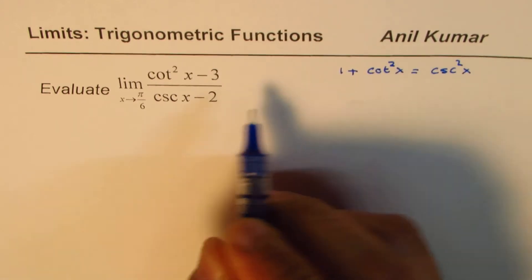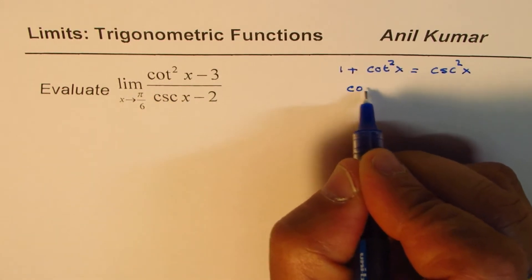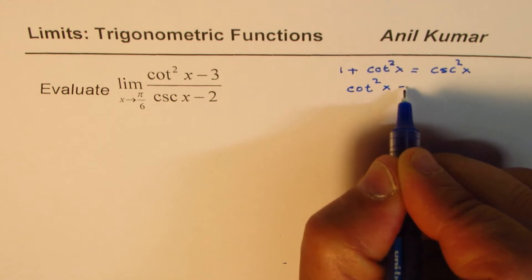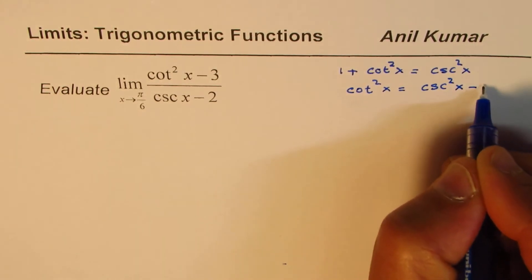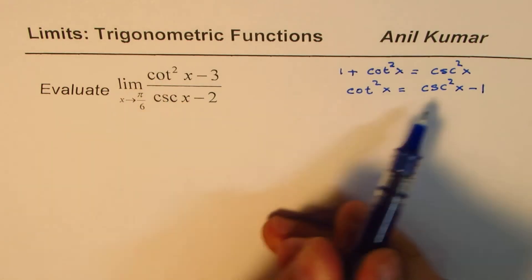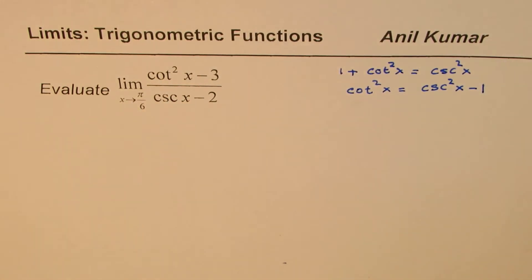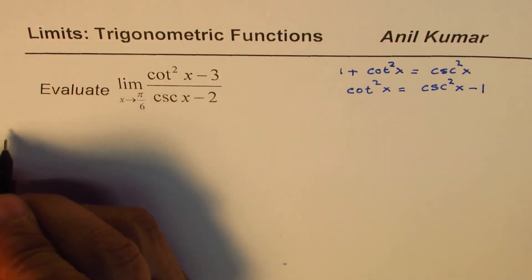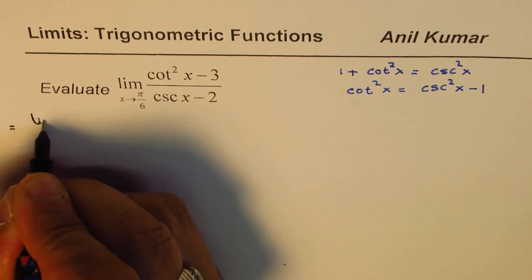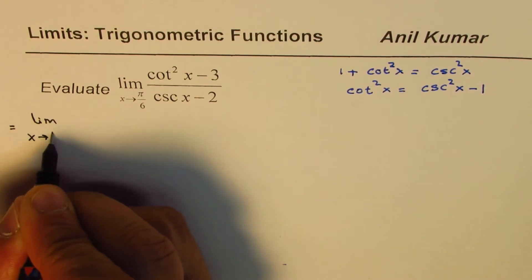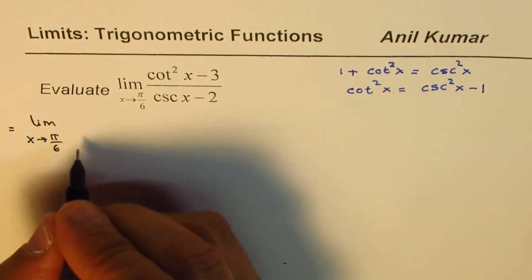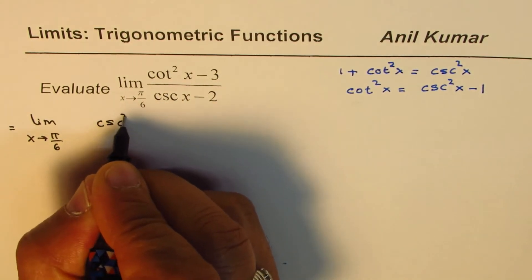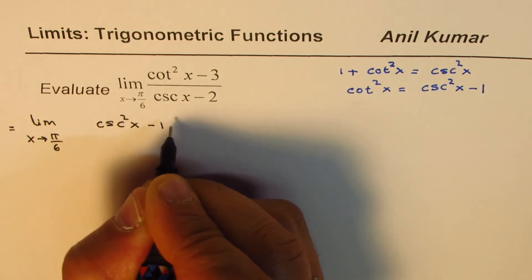So I could write cot²x as equal to csc²x - 1. To start with, we can write in terms of csc²x and then simplify. We could write this as limit x approaches π/6, and instead of cot²x I'm writing csc²x - 1.